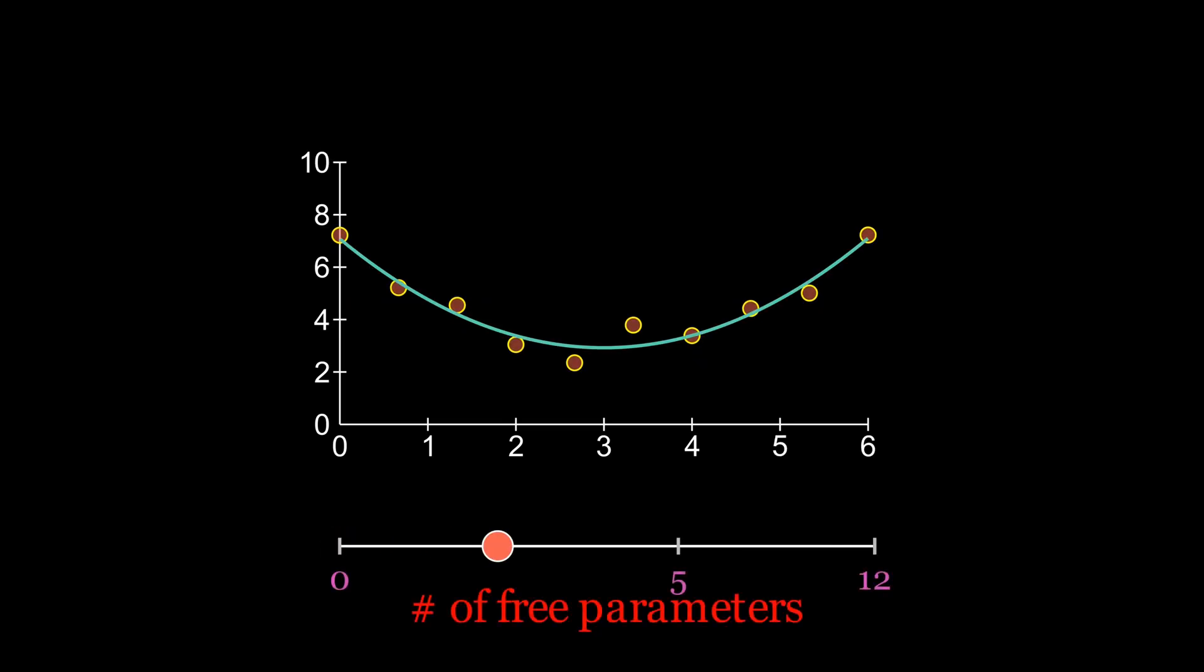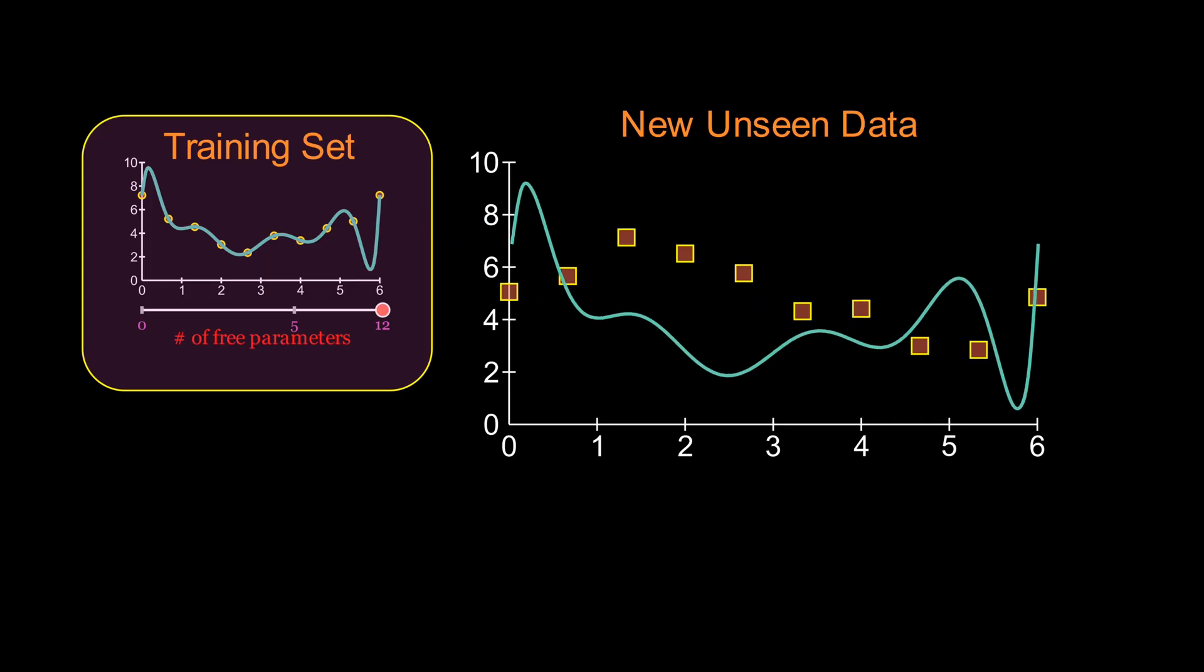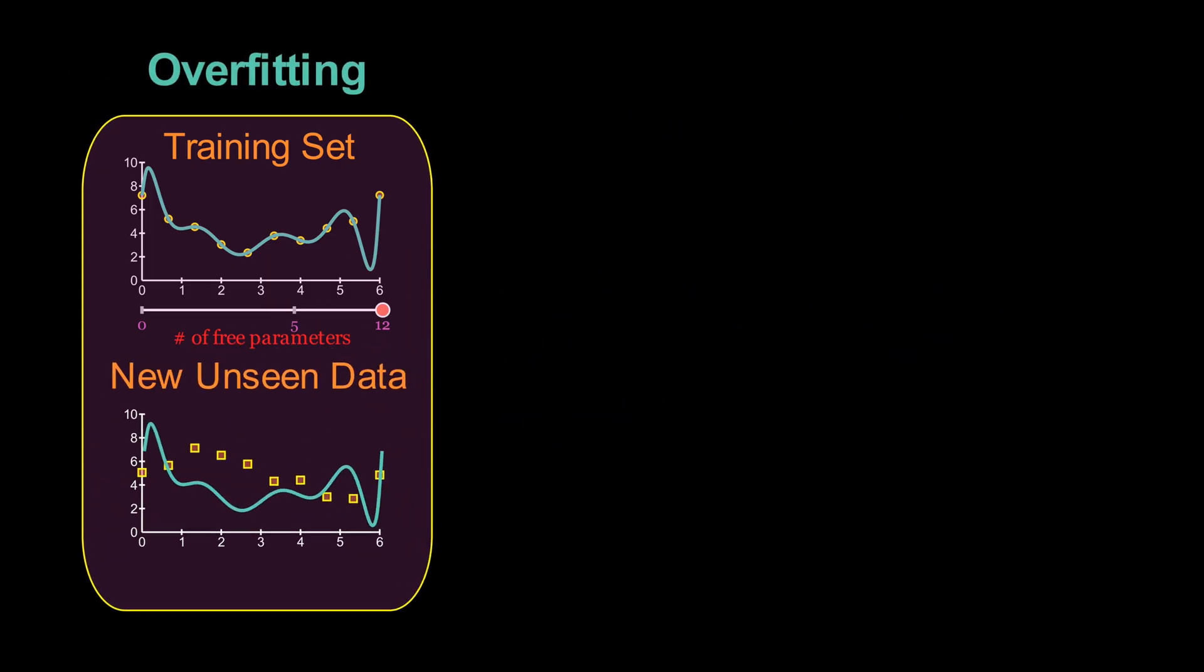The more parameters we allow, the more flexible the model becomes. But flexibility comes with a cost. When the number of free parameters exceeds what the data set can support, the model memorizes the training data. It fits it too perfectly. And while it looks impressive on the training set, its performance collapses on new, unseen data. That's overfitting.